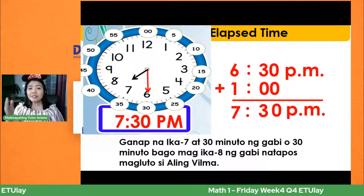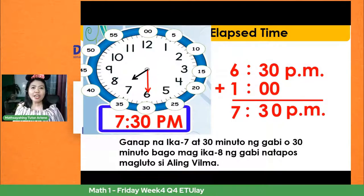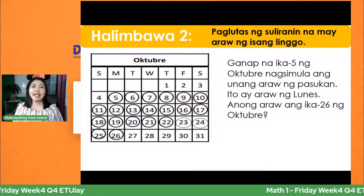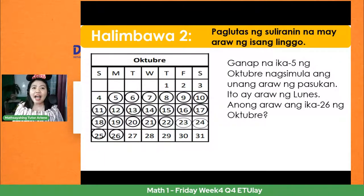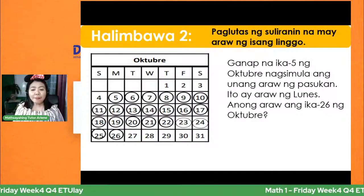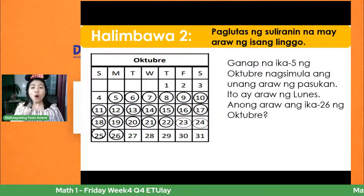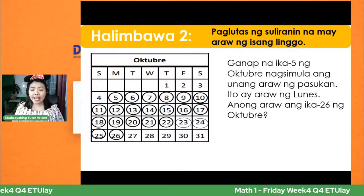Ngayon naman, ang elapsed time — ibig sabihin, makalipas ang oras. Pangalawa nating paglutas ay suliranin na may araw ng isang linggo. Ito yung problem natin: Ganap na ikalima ng Oktubre nagsimula ang unang araw ng pasok — October 5, araw ng Lunes. Anong araw ang ika-26 ng Oktubre?